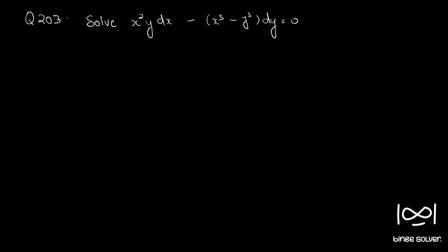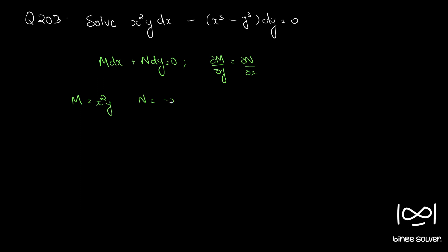Question number 203. Solve x squared y dx minus x cubed minus y cubed dy equal to 0. The given equation is in the form M dx plus N dy equal to 0. Let's first check whether the given equation is exact using the necessary and sufficient condition ∂M/∂y equal to ∂N/∂x. So M here is x squared y and N here is minus x cubed plus y cubed.